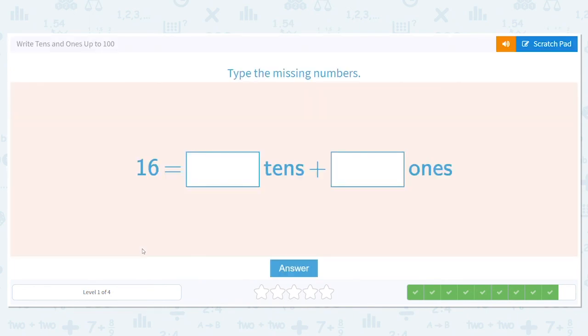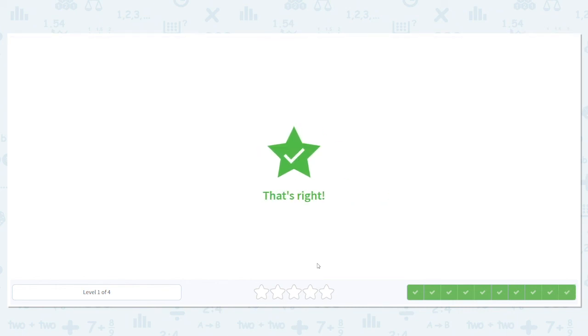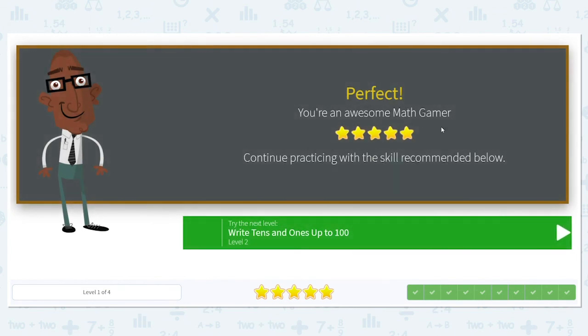Last one. Sixteen. Let's make that T chart one more time because it's greater than ten. And here is my tens place. And here is my ones place. How many tens do I have? How many ones do I have? Let's check it out. One ten and six ones.